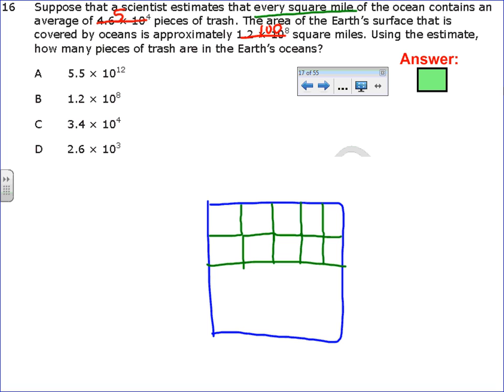So each square mile has, instead of that scientific notation number, I'm going to put 5 pieces of trash. Every square mile has 5 pieces of trash. The next thing it says is that the ocean has about how many square miles total? 100. Well, I'm not going to draw 5 100 times.